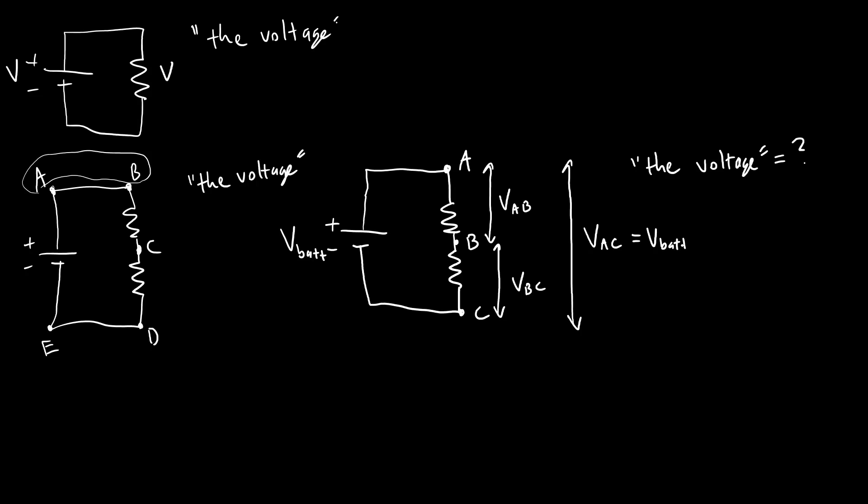So I can tell from my diagram that that battery voltage is going to be equal to what I've labeled as VAC here. And for example, I also have resistors R1 and R2.